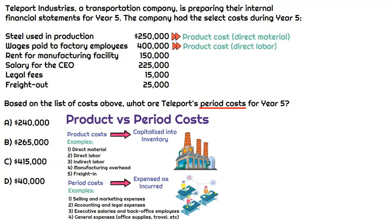How about rent for a manufacturing facility? This assumes the facility is separate from the office building and that the rent is completely for the manufacturing facility. Since we can assume this whole facility is used to produce the product, that is considered factory overhead — part of a product cost, not a period cost. If it said rent for office space for back office employees, that would be a period cost, but it says manufacturing facility, so it's a product cost.